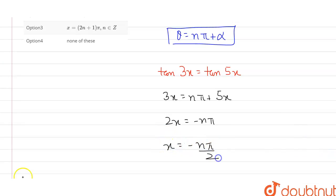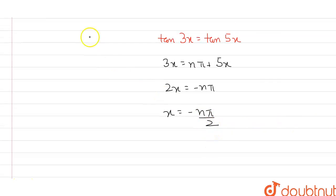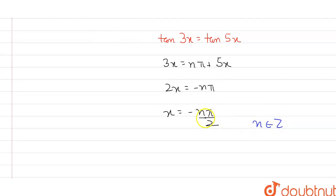So now my x belongs to -nπ/2, or we can say the solution of x is -nπ/2, where n is an integer. Since there is a minus here, if I put a negative value, this value will become positive, and if I put a positive value, this value will be negative. So in that case, I can generally say that x will be nπ/2.